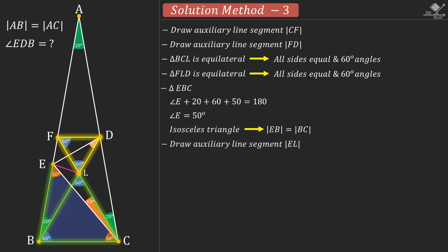Now, let's draw line segment EL and focus on this triangle. Notice that this is a 20, 80, 80 degree isosceles triangle. So let's write the base angles — we know that this will be 40 degrees. We can easily show that this is also 40 degrees by corresponding angles.